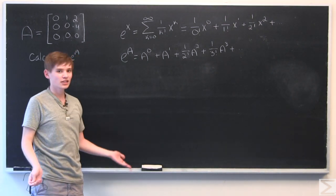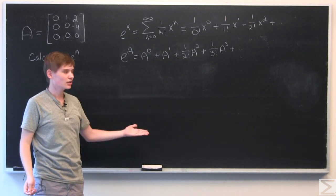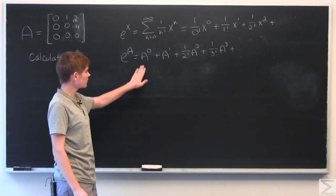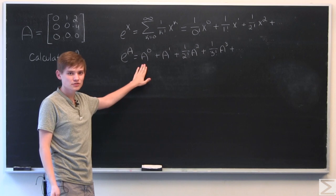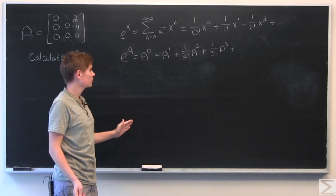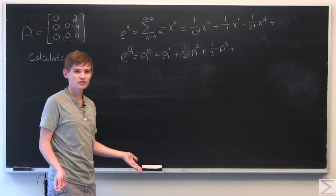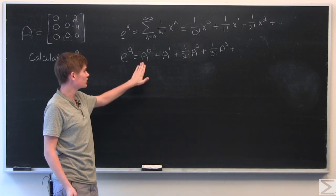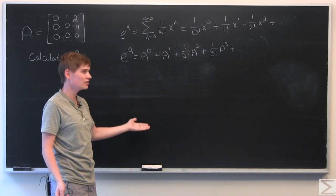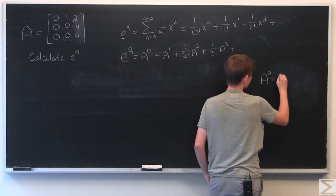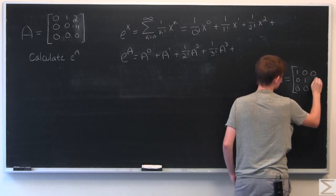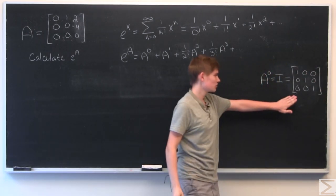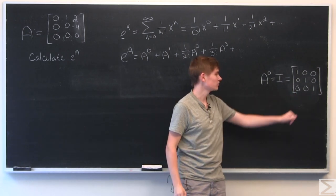So we just have to start calculating this and see what happens. To begin with, we have A to the 0th power. And just like with numbers, if you raise something to the 0th power, you get 1. If you raise a matrix to the 0th power, you get the identity matrix, which is just a matrix of 0s with 1 along the diagonal.